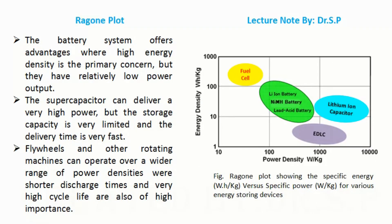The battery system offers advantages where high energy density is the primary concern, but they have relatively low power output. The supercapacitor can deliver very high power, but the storage capacity is very limited and the delivery time is very fast. Flywheels and other rotating machines can operate over a wider range of power densities where shorter discharge times and very high cycle life are also of high importance.